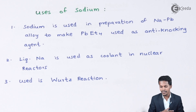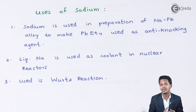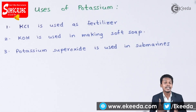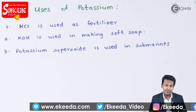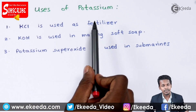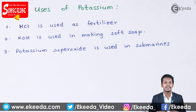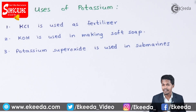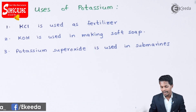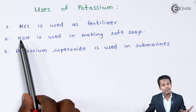Those were some uses of sodium. Now let us discuss the uses of potassium. KCl is used as a fertilizer — both bio-fertilizers and inorganic fertilizers are used nowadays, and KCl serves this purpose. Next, potassium hydroxide (KOH) is also used in making soft soaps.